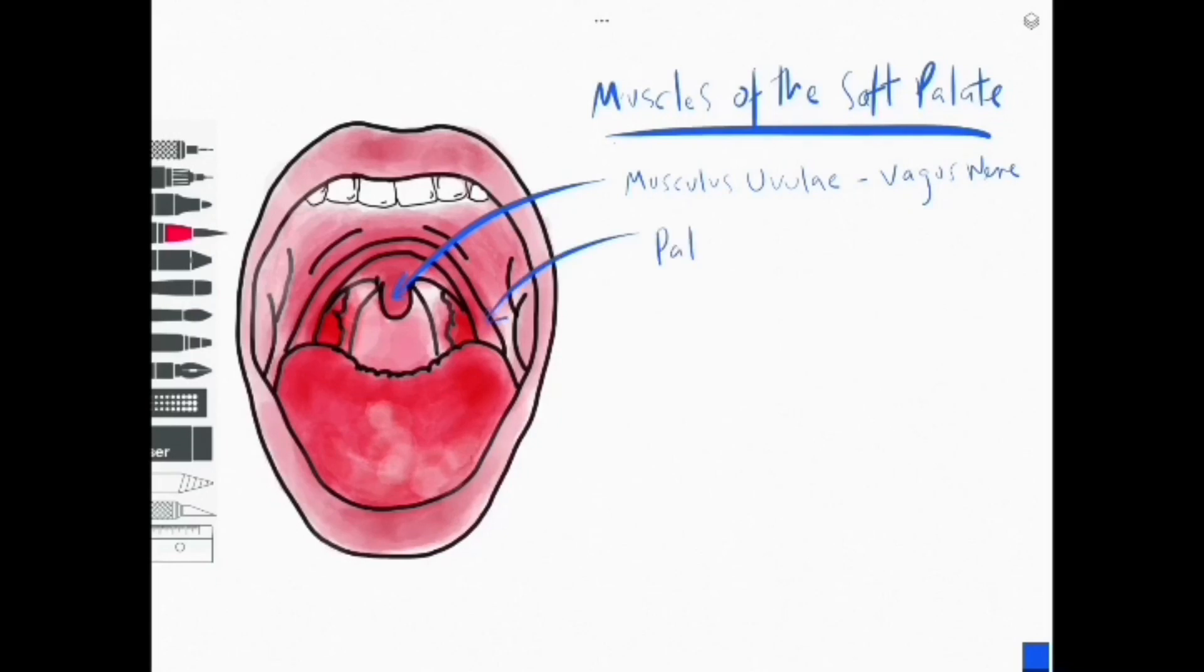The next muscle is the palatoglossus muscle. The palatoglossus muscle is innervated by vagus and it depresses the palate, moves the palatoglossal arch forward from the midline and elevates the back of the tongue.